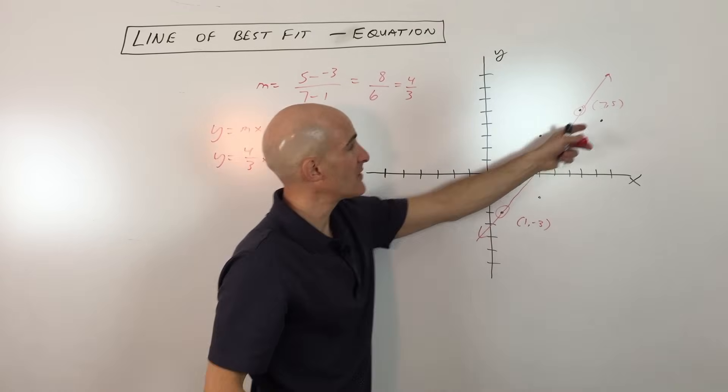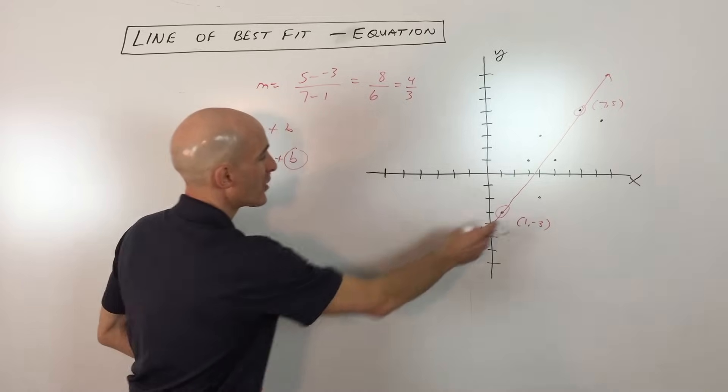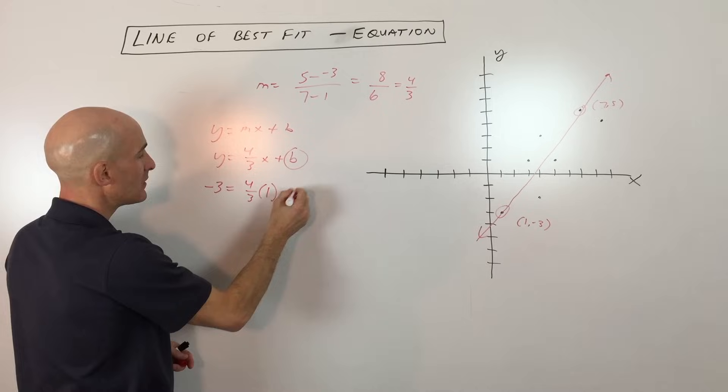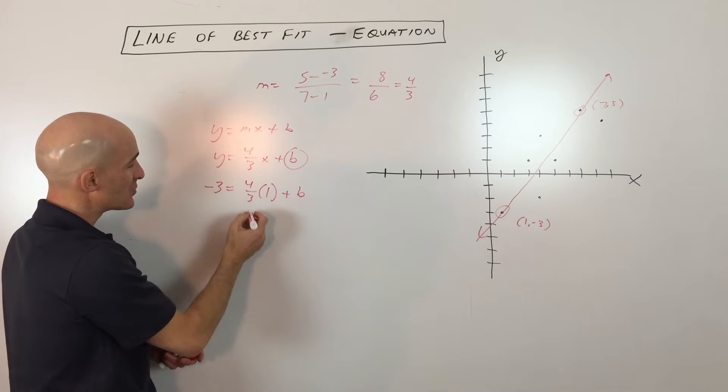value by using either this point that's on the line or this point. I'm just going to use the point one negative three. So when y is negative three, x is one, and I'm solving for b. So this is four thirds